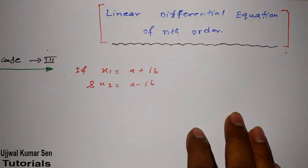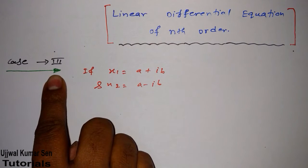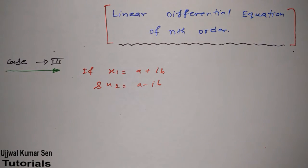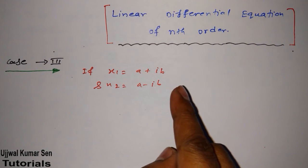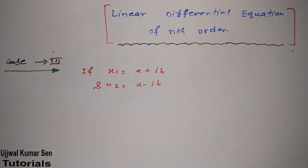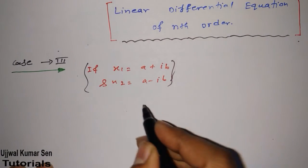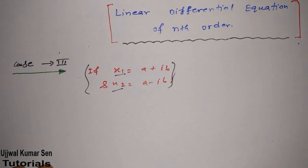Welcome to this tutorial. In this tutorial I am going to share with you Case 3. Basically these days I am talking about linear differential equation of nth order. Case 3 is this: x1 is equal to a plus ib and x2 is equal to a minus ib. If you haven't watched my previous videos, you may have missed something, so let me share in short what x1 and x2 are.